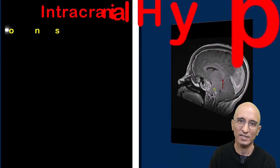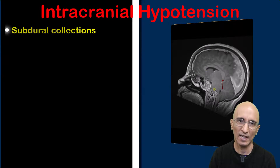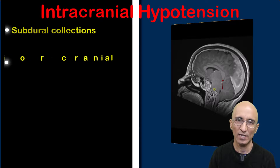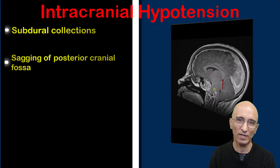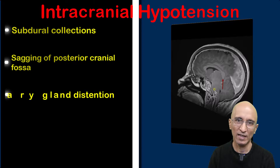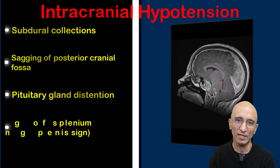This constellation of findings is consistent with intracranial hypotension, as evidenced by bilateral subdural collections, sagging of the posterior cranial fossa with narrowing of the distance between the mammillary body and pons, narrowing of the angle between the pons and the midbrain, narrowing of the interpeduncular angle, distension of the pituitary gland, and drooping of the splenium of the corpus callosum.